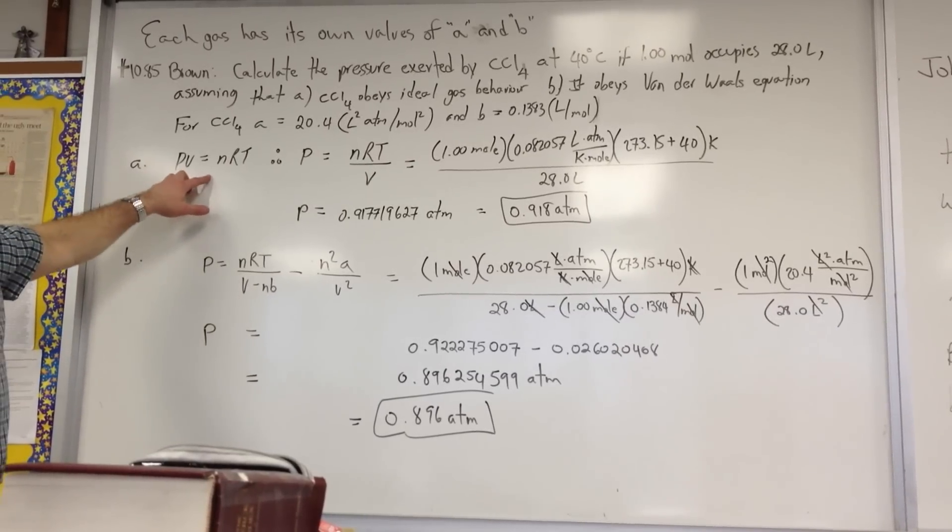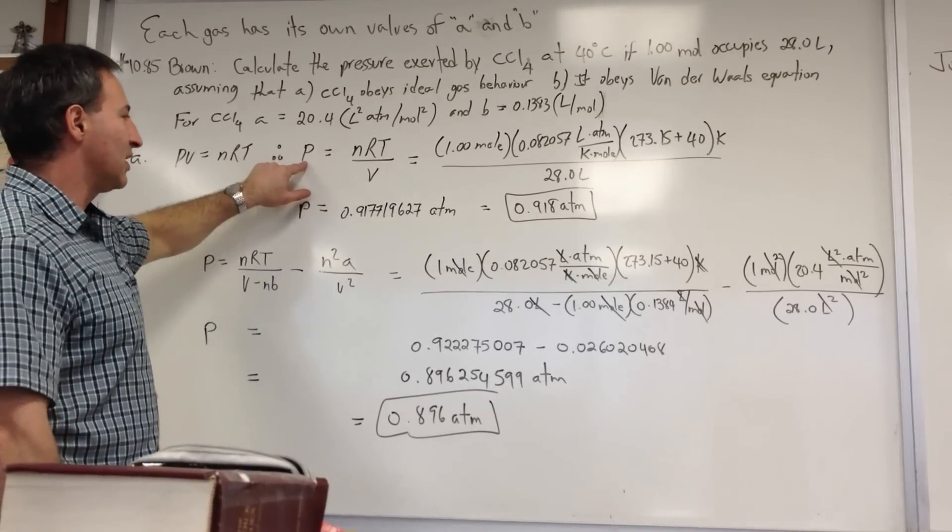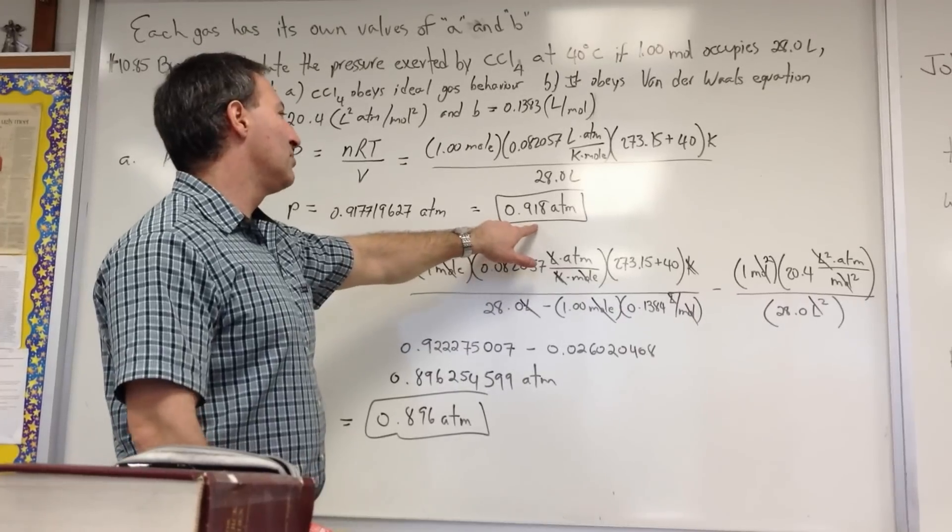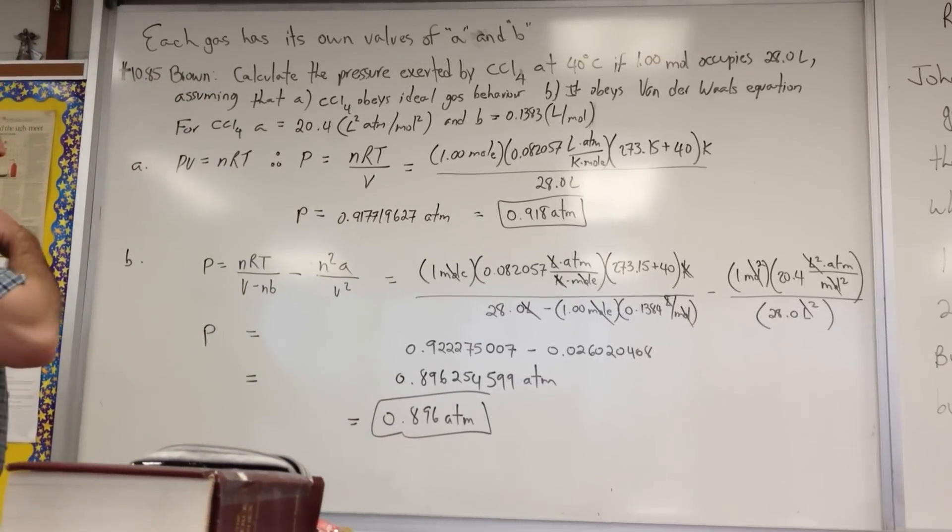So we first solved it using the ideal gas equation. We solved for P, we isolated P, we plugged in our values, and we get a value of 0.918 atmospheres after we correct for three significant figures.